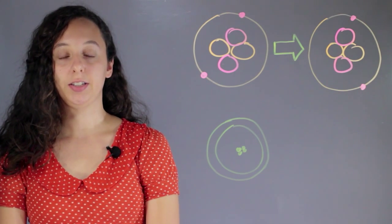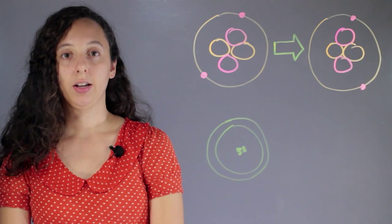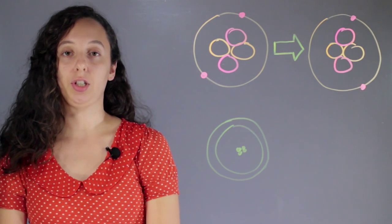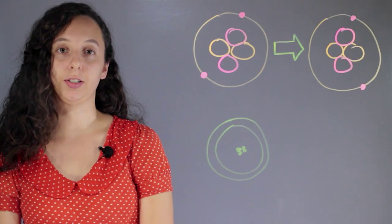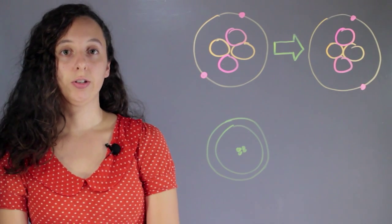Gamma decay is a type of radiation and it completely leaves the atomic number or the number of protons in the nucleus unchanged. So let's look at this example.